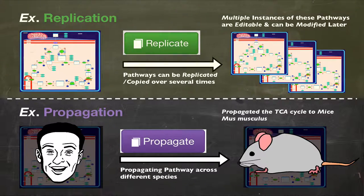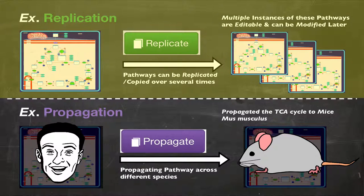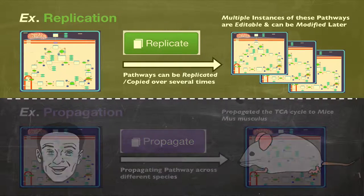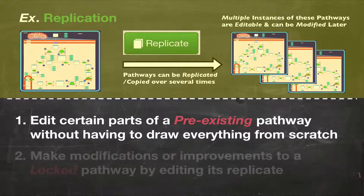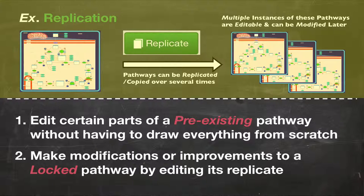First, let's learn how to replicate a pathway. This is a useful tool if we want to edit certain parts of a pre-existing pathway without having to draw the whole pathway from scratch. Replication also allows you to make modifications or improvements to a locked pathway found in the PathWiz repository.